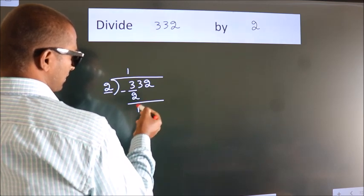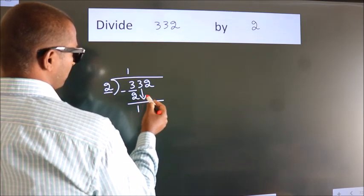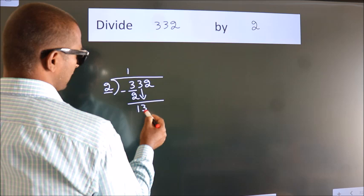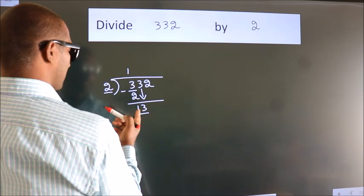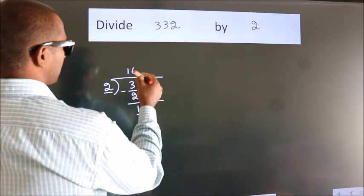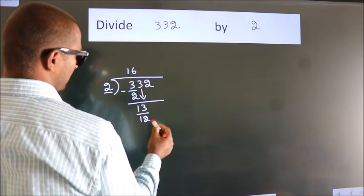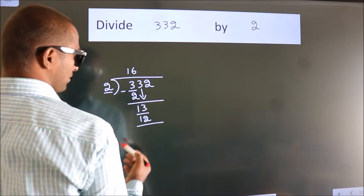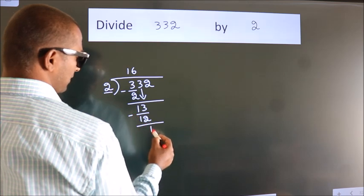After this, bring down the beside number. So 3 down. So 13. A number close to 13 in the 2 table is 2 times 6, 12. Now we subtract. We get 1.